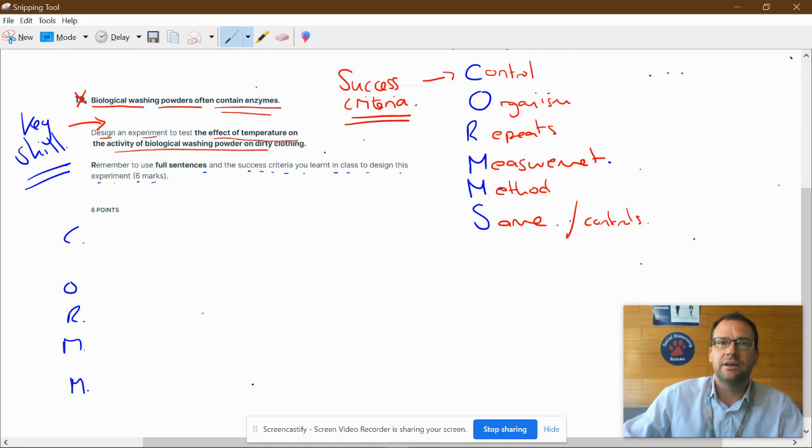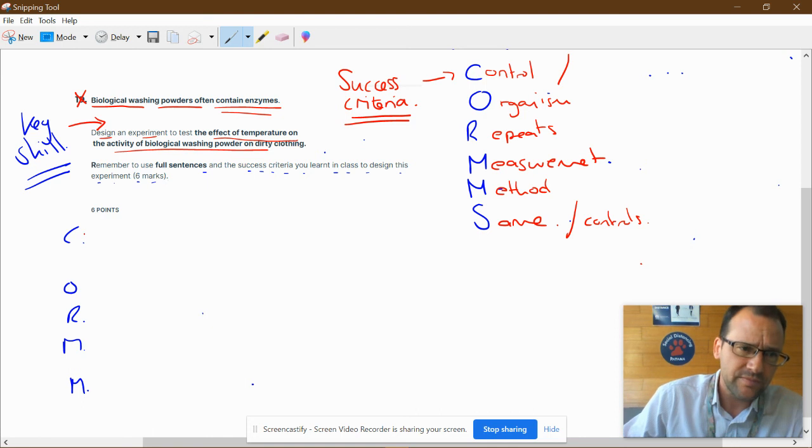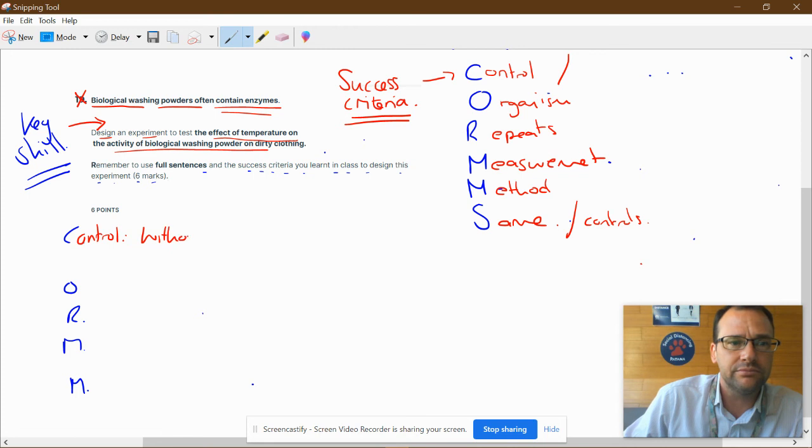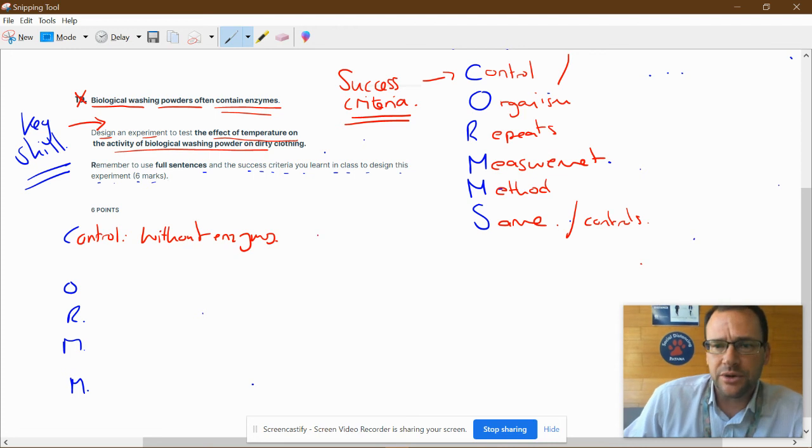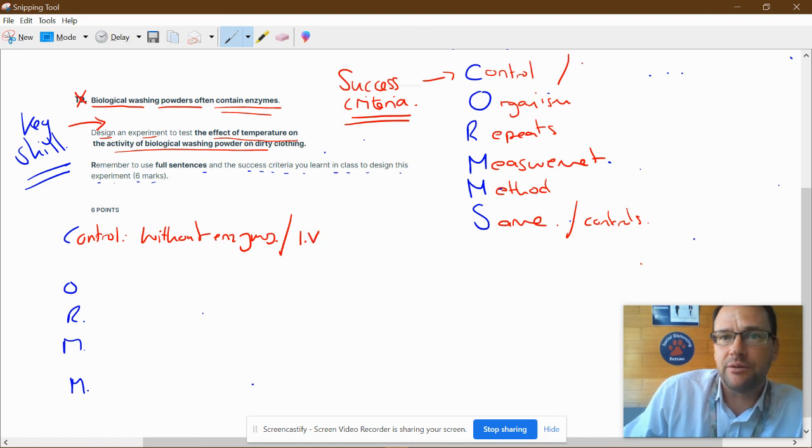If we're going to have a control, this is going to be without enzymes. We have to have a control in order to compare. What was the effect of the washing with or without enzyme? Was there any effect at all? So the control is without enzymes.